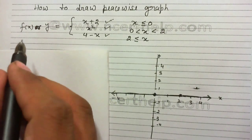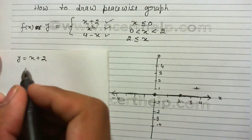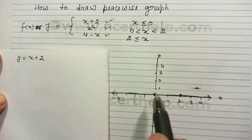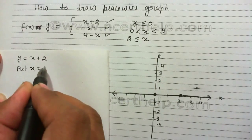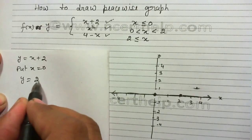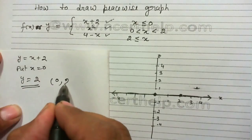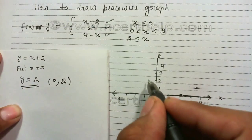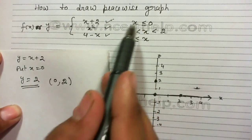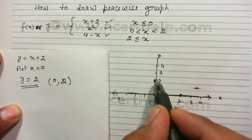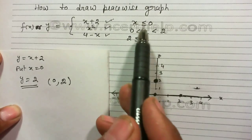To draw the graph of the first piecewise function, I will find some points of the equation y equals x plus 2. In the first piece, the value of x is always less than or equal to 0, so we can put x equal to 0. When I put x equal to 0, I get y equal to 2. So the first point is (0, 2), and since 0 is included in the solution, I will use a dark filled circle.